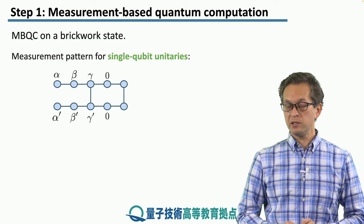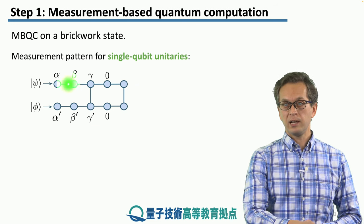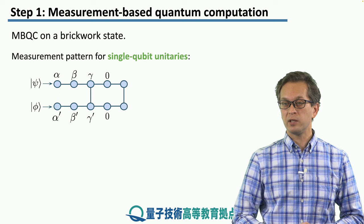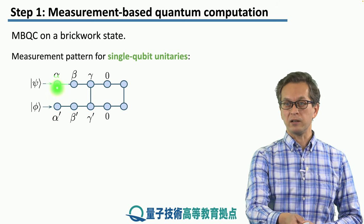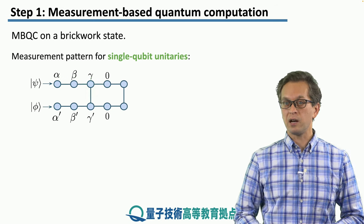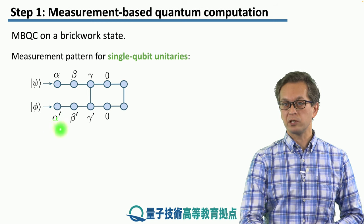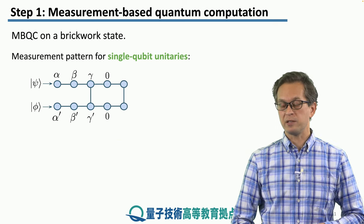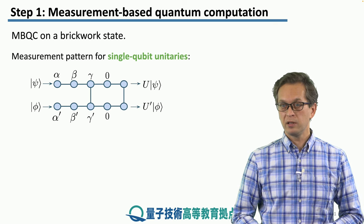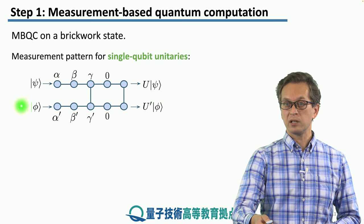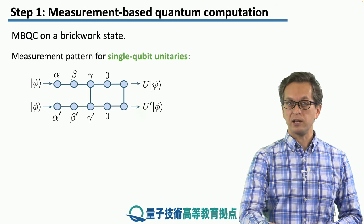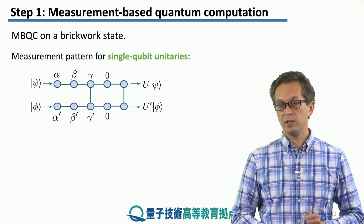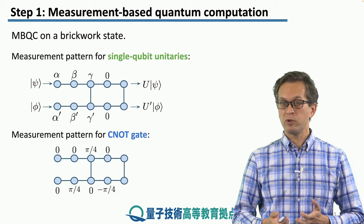If we want to apply single qubit unitaries, all we have to do is the following measurement pattern. Let's say that we take one unit cell from the brickwork state, and the first qubit is initialized in the state psi, and the second qubit in the state phi. And then we measure these qubits at an angle alpha, then an angle beta, and then angle gamma. Similarly, for the lower logical qubit, we measure it at angles alpha prime, beta prime, gamma prime. This zero means that we are measuring in the X basis. The output of such a measurement pattern is that we are applying a particular unitary U to the initial state psi, and some other U prime to the initial state phi. Here, the angles alpha, beta, gamma determine what type of unitary we are applying.